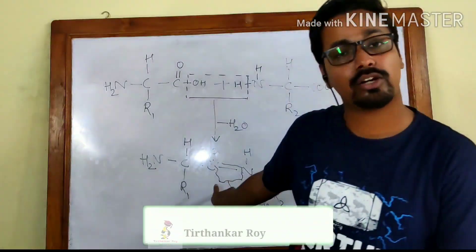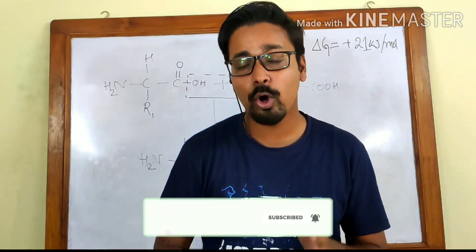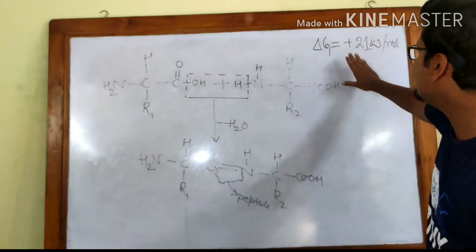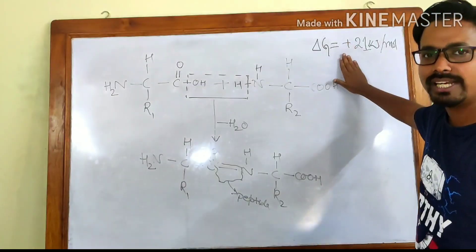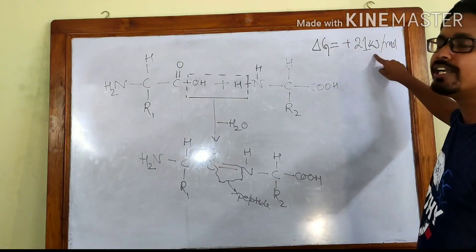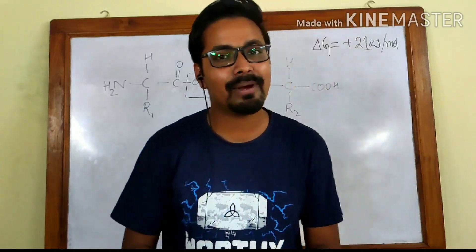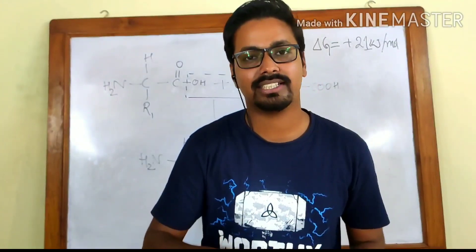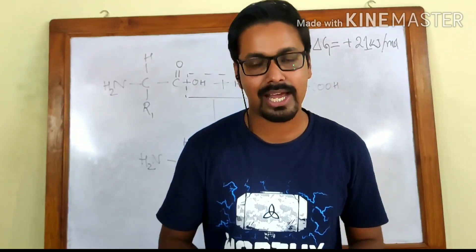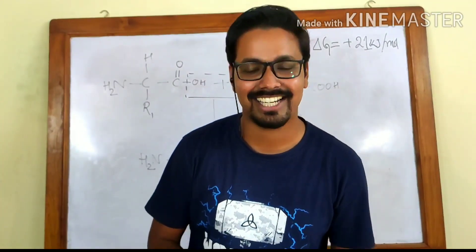That's all for today's video. The key takeaways are: peptide bonds are formed between the carboxyl carbon and the amino nitrogen via a dehydration reaction; the ΔG value is +21 kilojoules per mole, confirming it is an endergonic process. I will add descriptions of active peptides in the human body and their functions in the video description. Thank you everyone, and until next time — cheers!